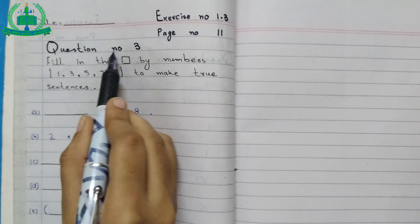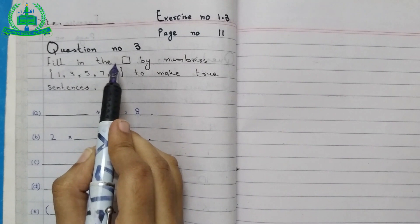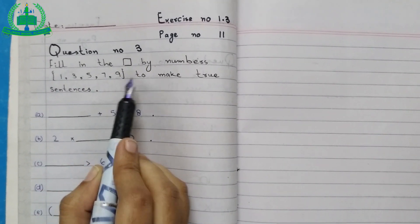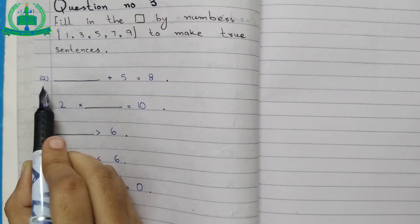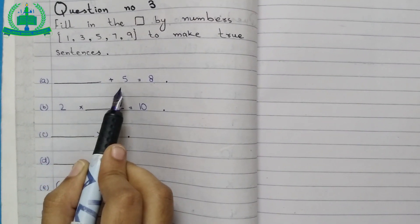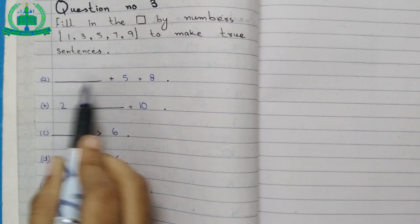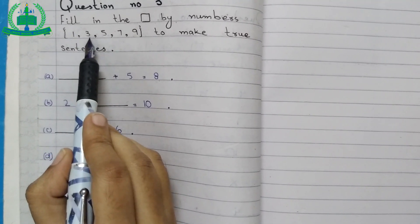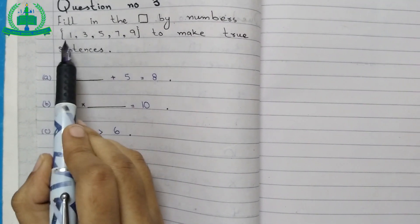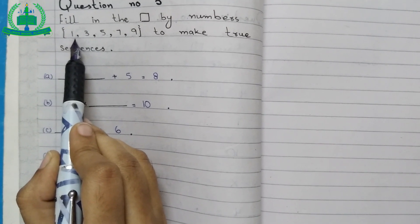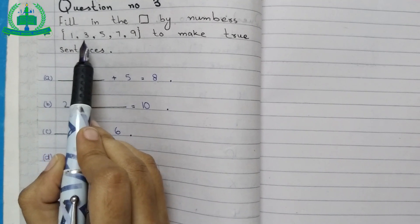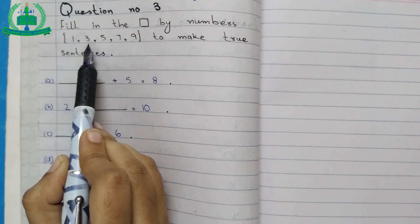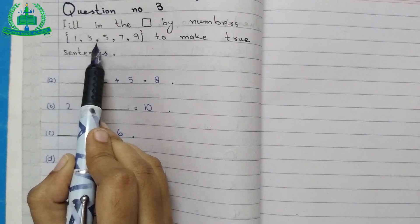Now start question number 3. Fill in the box using numbers 1, 3, 5, 7, 9 to make true sentences. A: dash plus 5 equals 8. We will try all numbers one by one. 1 plus 5 equals 6, which is incorrect. We try the second number — 3 plus 5 equals 8. So 3 is the correct answer. We write 3.